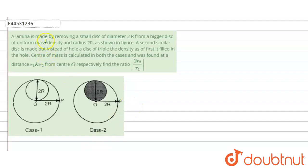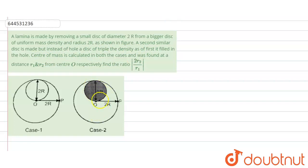In this question, there is a lamina made by removing a small disc of diameter 2r from a bigger disc of uniform mass density and radius 2r. This is the bigger disc of radius 2r; we are removing a portion of radius r. There is also a second similar disc, but instead of a hole, a disc of triple density (3σ) is filled in the hole.